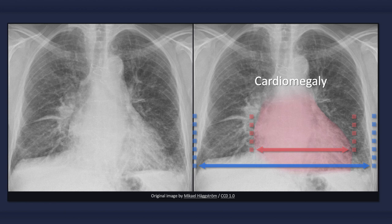In this image, the cardiothoracic ratio is approximately 0.6. You should also be aware that on anterior-posterior films, determination of heart size is unreliable due to magnification.